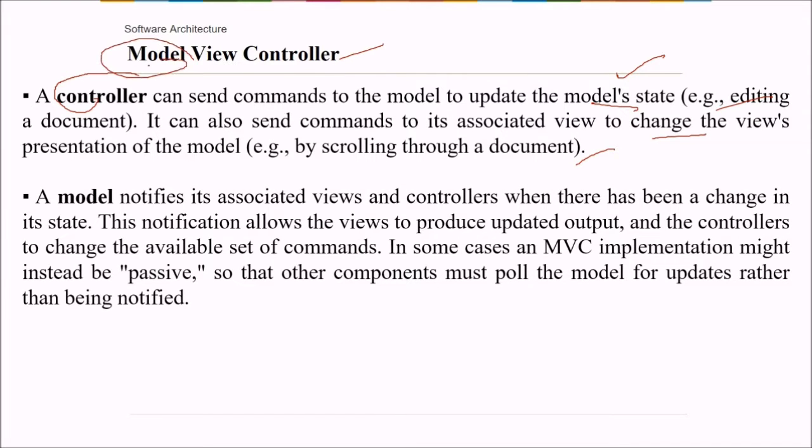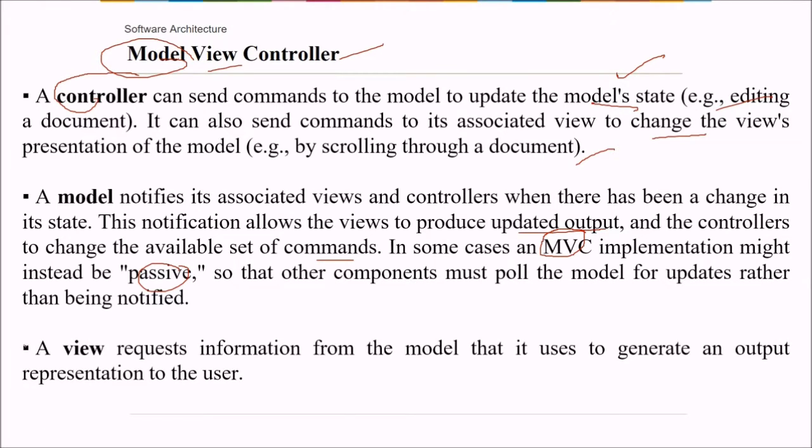What does this model do then? It notifies its associated view and controller where there has been a change in its state. This notification allows the view to produce updated output and the controllers to change the available set of commands. In certain cases MVC implementation might instead be passive. So the other components must pull the model for updates rather than being notified. What about a view? The view requests information from the model that it uses to generate an output representation to the user.